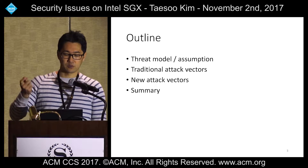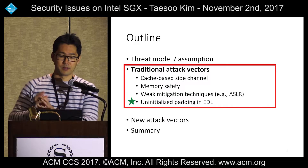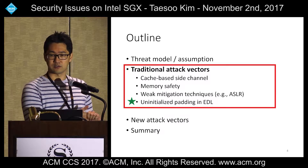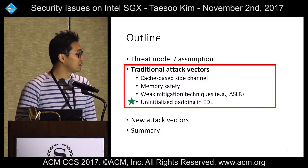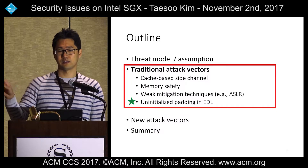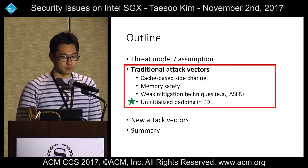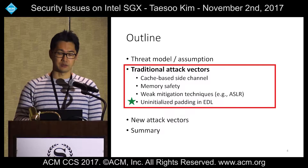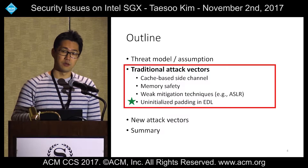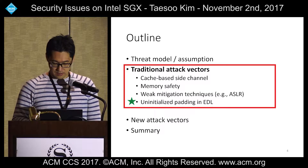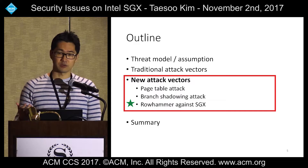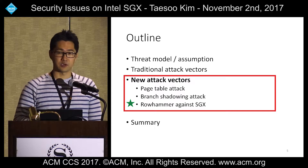The difference between traditional and new attack vectors is subtle. The traditional attack vector is the kind of attack you can see from traditional applications — without SGX, these exploitation techniques completely make sense. The new attack vector, on the other hand, is specialized to SGX, relying on SGX-specific features. For traditional attack vectors I'll cover cache-based side channel, memory safety issues, and a new attack called uninitialized padding. Then I'll move to new attack vectors: page table attacks, branch shadowing, and how to lock down an entire data center using row hammer inside SGX.